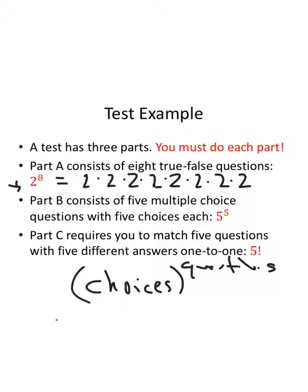Part C requires you to match five questions with five different answers one-to-one. So if I have five, and I have five options. So five options for the first one, but I've used one of them. So four options for the second question. Three, two, and one. We're going to multiply those all together, and that's how we get the five factorial. Let's put this all together.